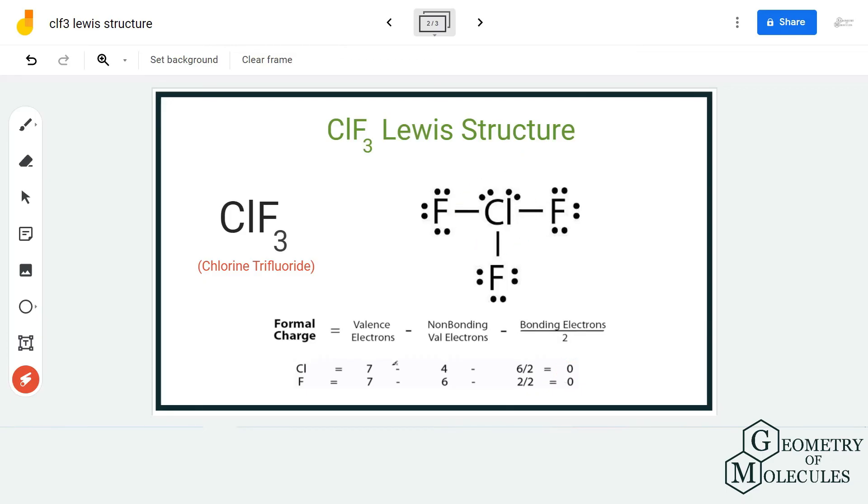Similarly, for fluorine we have seven valence electrons, out of which six are non-bonding and two are bonding, and it also has a formal charge of zero. So all the atoms in this molecule have a formal charge of zero.